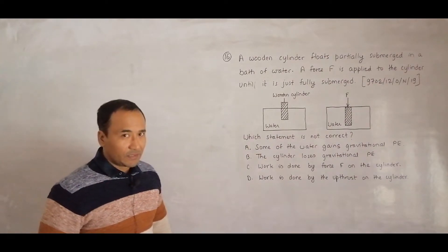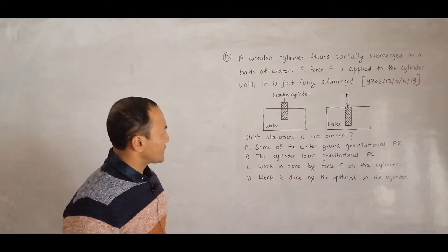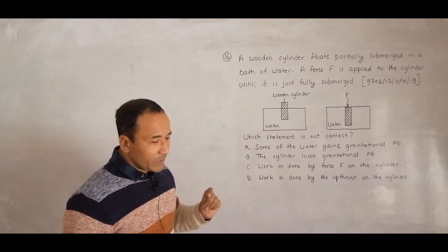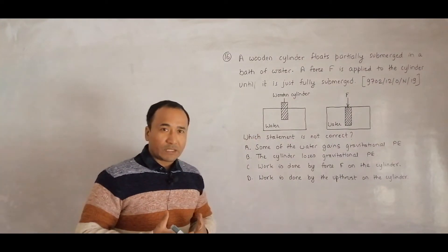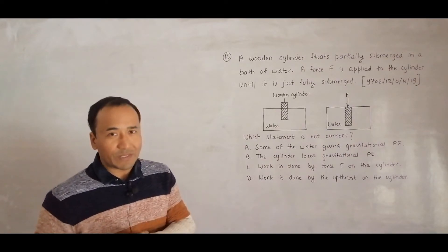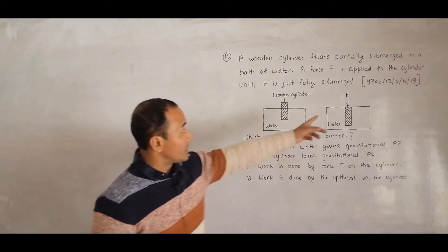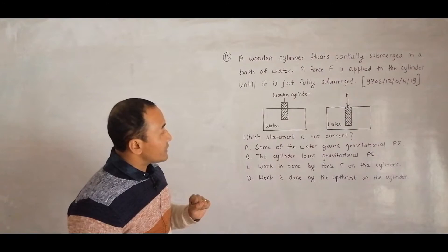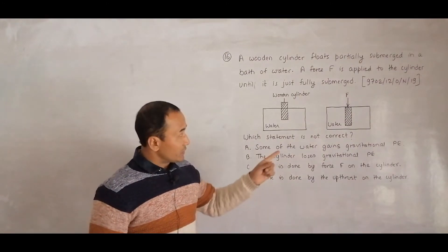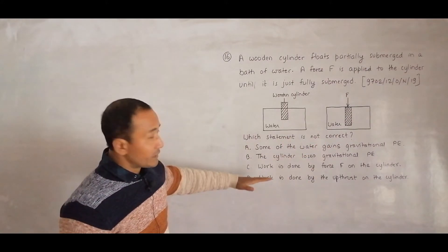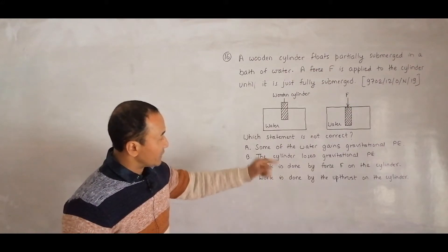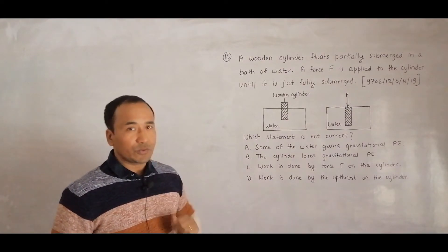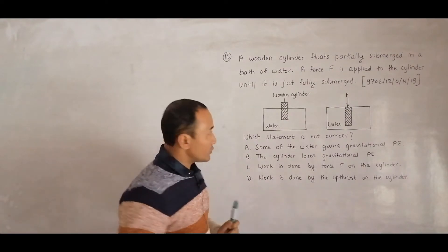Now we have to analyze which statement is not correct. We know that a floating body always displaces a certain amount of liquid equal to its own weight - it's a state of equilibrium. Option A says some of the water gains gravitational potential energy. This is true.